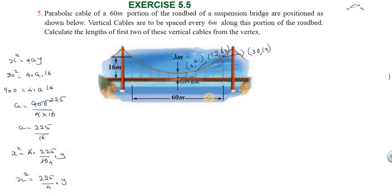Next, we substitute the unknown point at 6 comma h1. The distance is 6 meters from the vertex, plus 3 meters base height. So at 6 comma h1, x square value is 36, so 36 equal to 225 by 4 into h1.